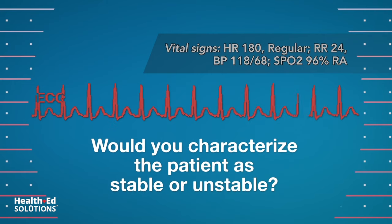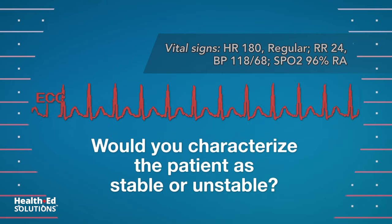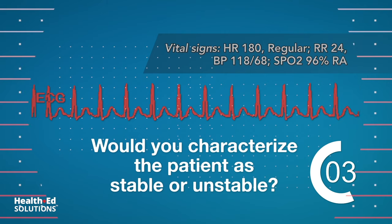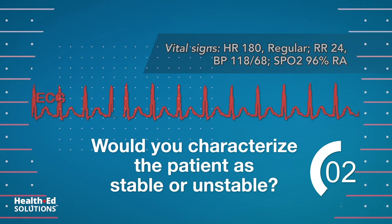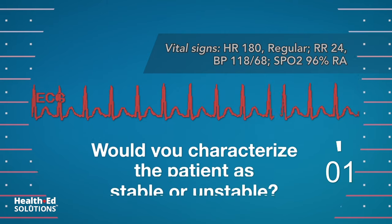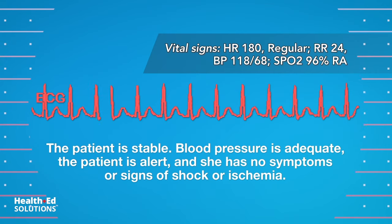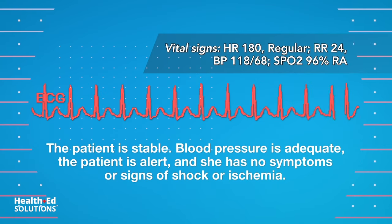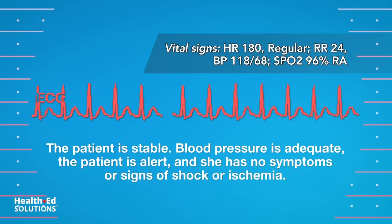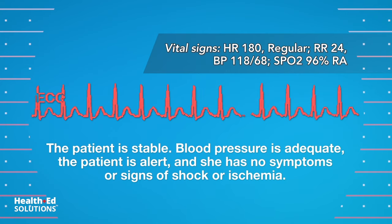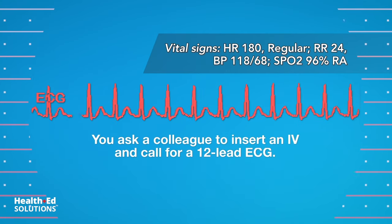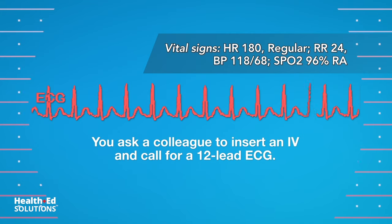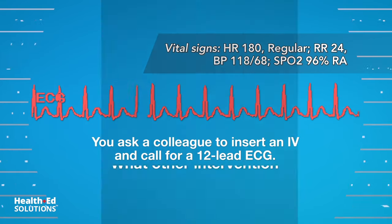Would you characterize the patient as stable or unstable? The patient is stable — blood pressure is adequate, the patient is alert, and she has no symptoms or signs of shock or ischemia. You ask a colleague to insert an IV and call for a 12-lead ECG.